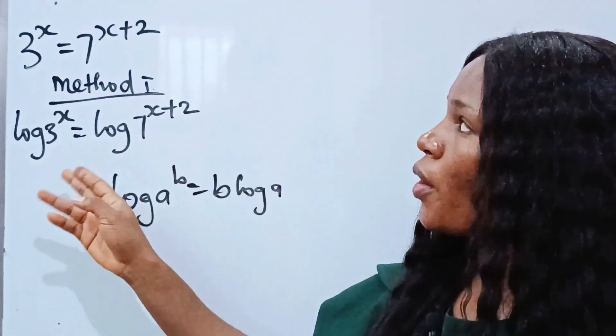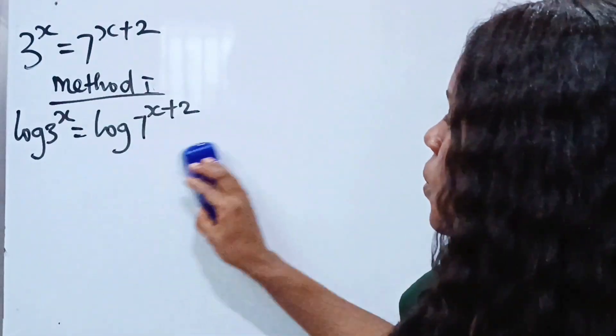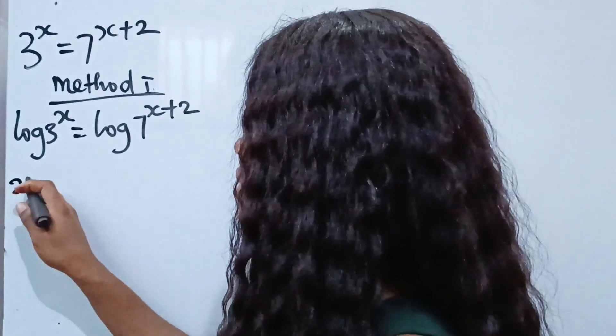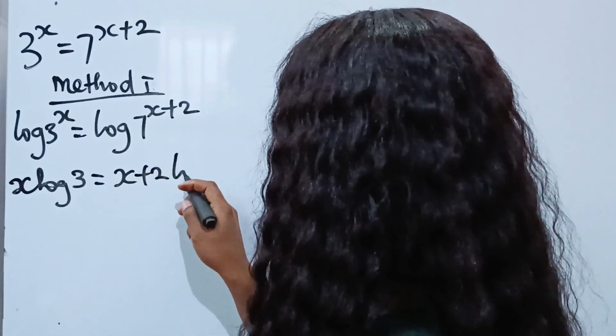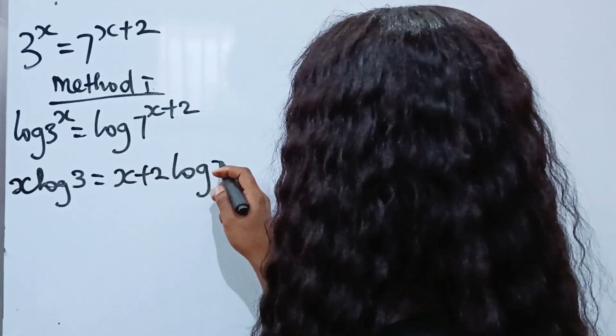So we are going to apply that law here. And if we do that, we'll have x multiplied by log 3 equals x plus 2 multiplied by log 7.